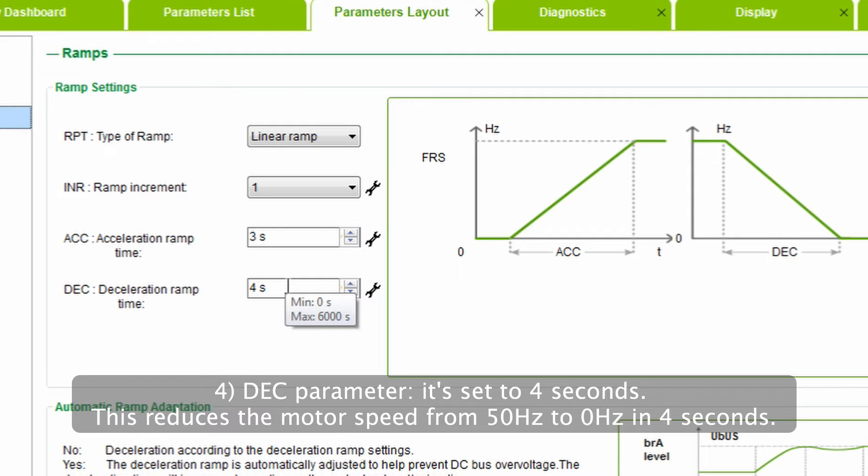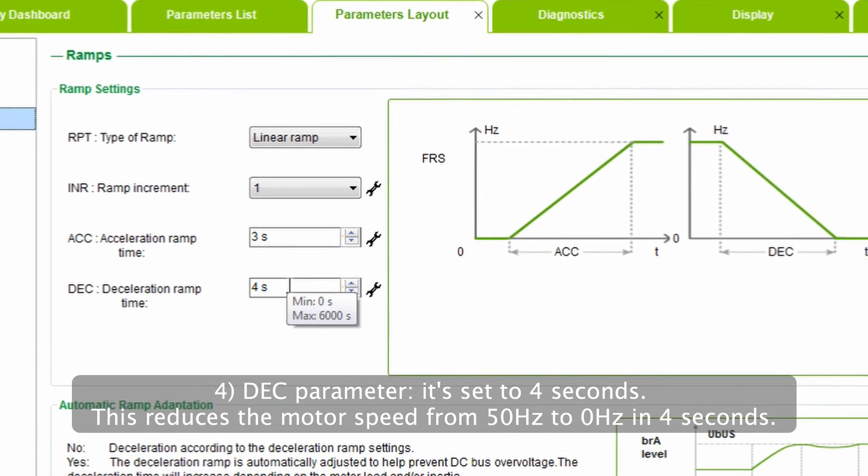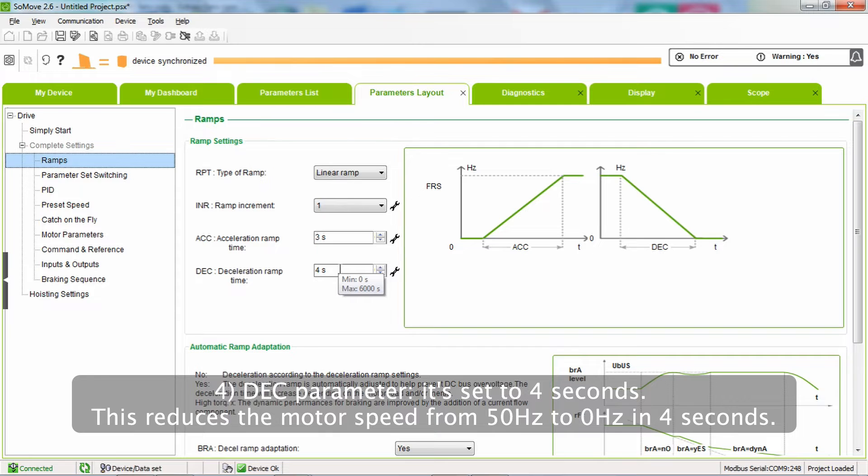Number 4: DEC parameter. It's set to four seconds. This reduces the motor speed from 50 hertz to zero hertz in four seconds.